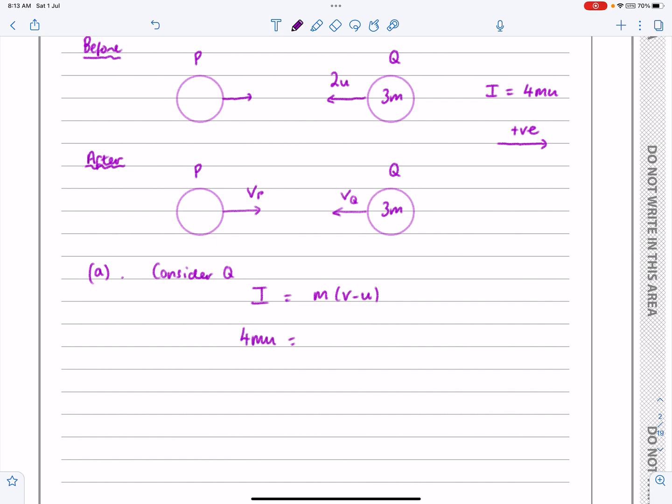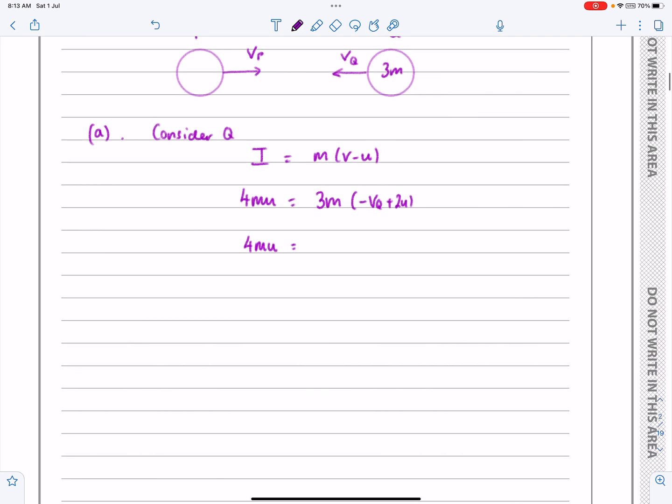So I've got 4MU is equal to, well, the mass is 3M, but now when I'm doing V minus U, if I take to the right as positive, it's going to be minus VQ, and it's going to be minus 2U, but minus minus makes a plus 2U there. Let's multiply it all out and see what we get. So we get 4MU is equal to minus 3MVQ plus 6MU.